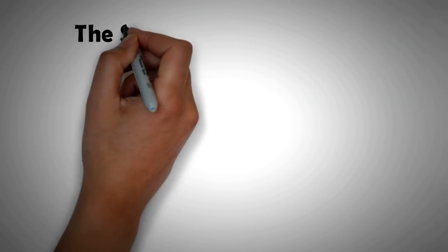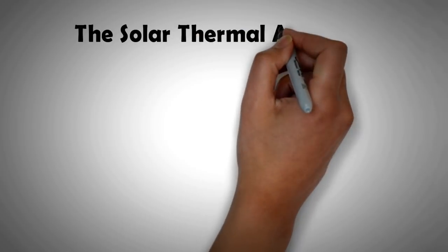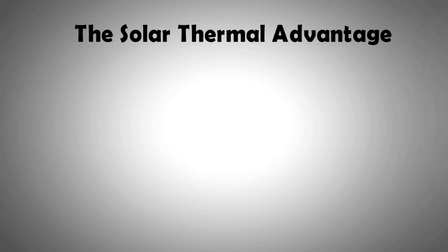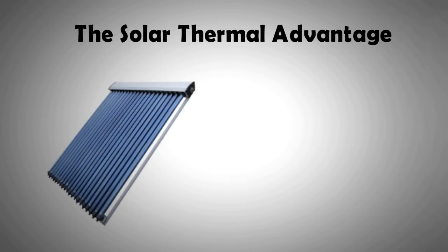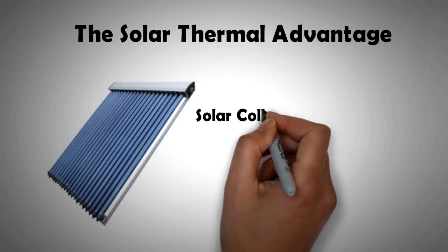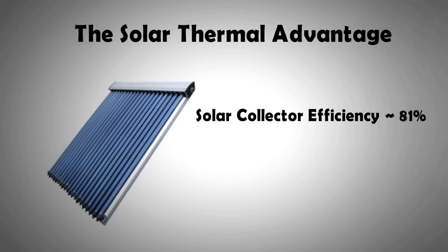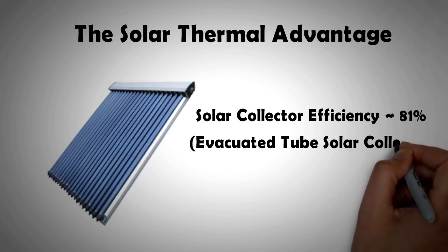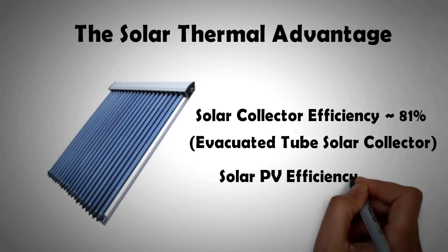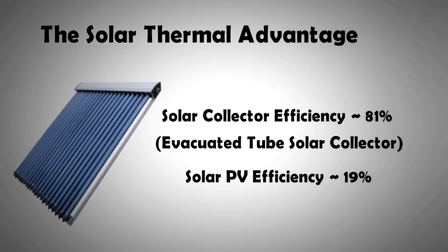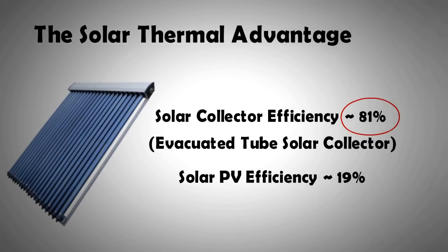Let's begin by laying down the basic advantage of solar thermal technology, which is its high energy conversion. In evacuated tube collectors, for instance, we can convert 81% of solar energy into thermal energy. When compared to a typical PV panel which has an efficiency of 19%, we can see that over four times more energy is made available for utilization by solar thermal for the same amount of sunshine.